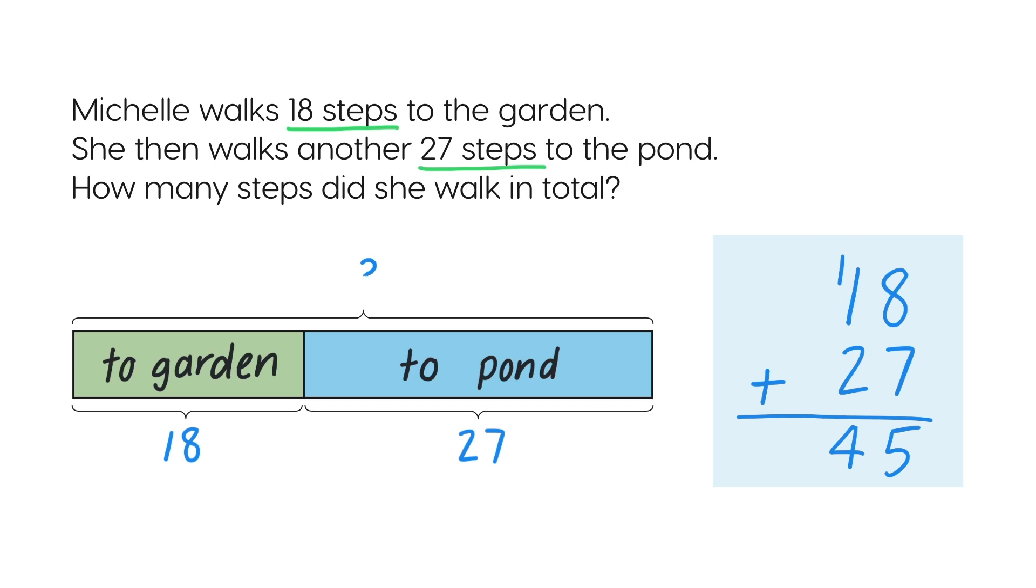Eighteen add twenty-seven is forty-five. So Michelle walked 45 steps in total.